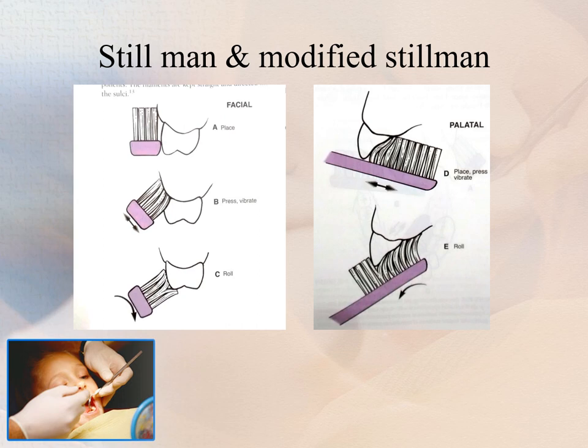The modified Stillman method requires that the brush be placed with bristle ends resting partly on the cervical portion of the teeth and partly on the adjacent gingiva, pointing in an apical direction at an oblique angle to the long axis of the teeth. Apply pressure against the gingival margin to produce a perceptible blanching, then move the brush with about 20 short back-and-forth strokes while simultaneously moving it coronally along the attached gingiva. A soft multi-tufted brush should be used to minimize trauma. The modified Stillman method may be recommended for cleaning in areas with progressive gingival recession and root exposure.